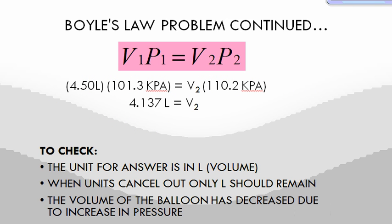When you put those numbers into the equation, your initial volume was 4.5 liters, your pressure is 101.3 kilopascals. We're looking for the final volume if the pressure was increased to 110.2 kilopascals. Do the math, and you get your final volume of 4.137 liters.